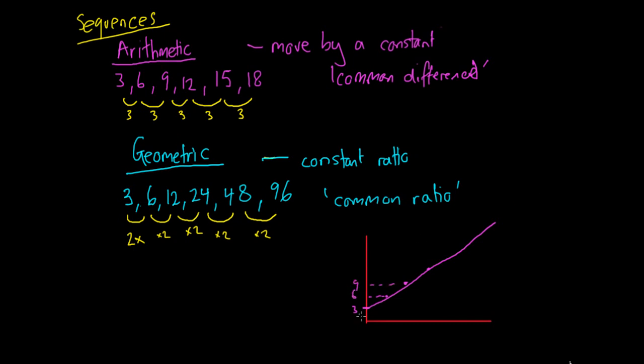But if we look at a geometric sequence, so it starts at 3, and then the next point is 6, but then the next point is 12 after that, and then we've got 24 after that, so we can see geometric sequences kind of have this curved shape.